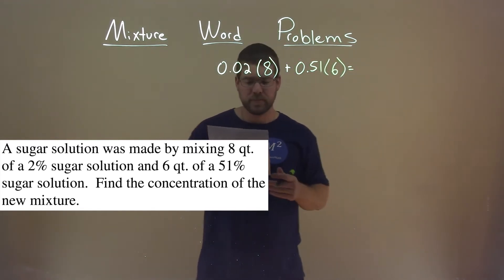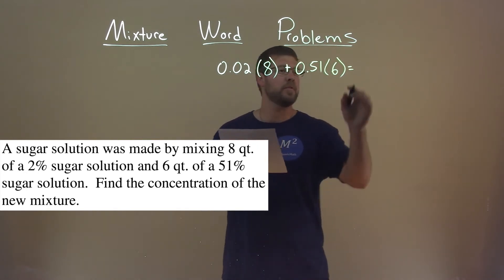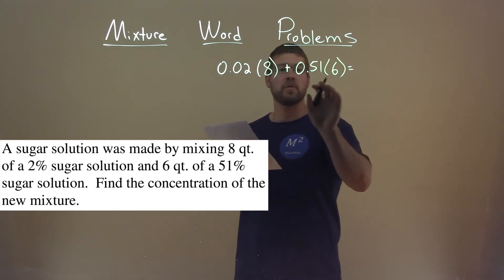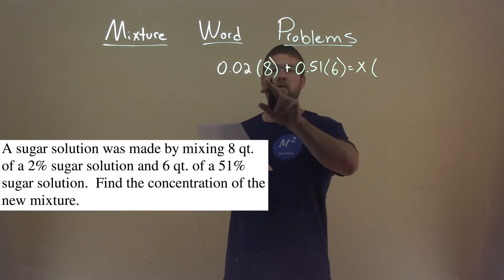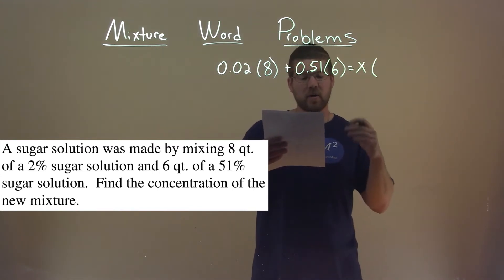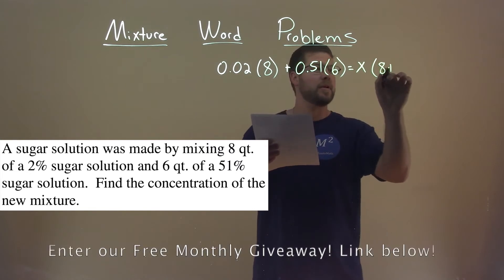What should that be equal to? Well, that should be equal to the 8 plus 6, the total, or the final percent which we're going to find, times the total number of quarts, the 8 plus 6.